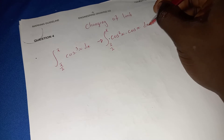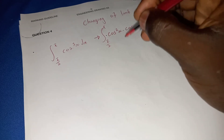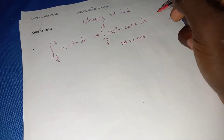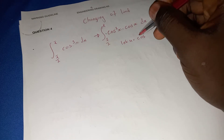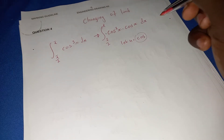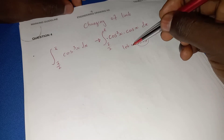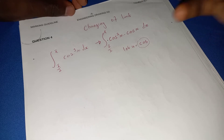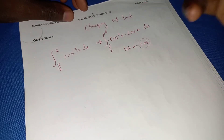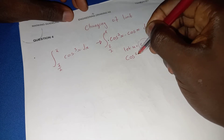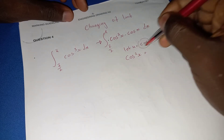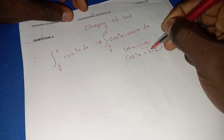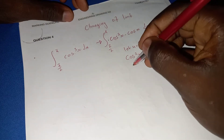Now we're going to check what substitution to make. If we let u equal cos x, we won't be able to cancel anything. So instead we're going to use the identity: cos²x equals one minus sin²x.